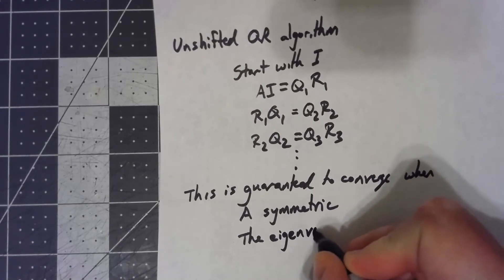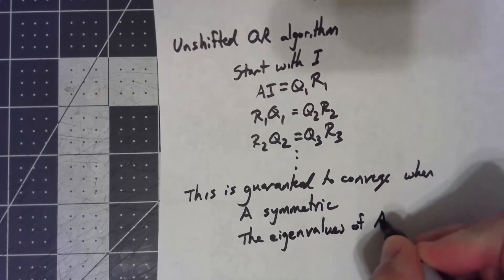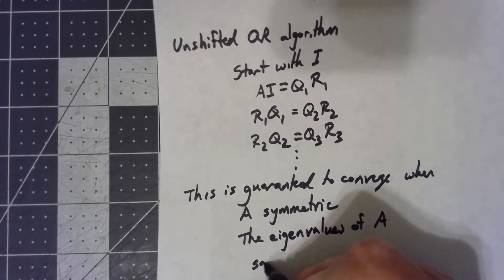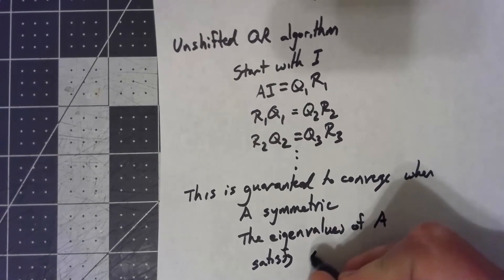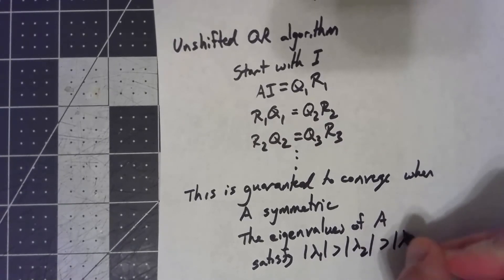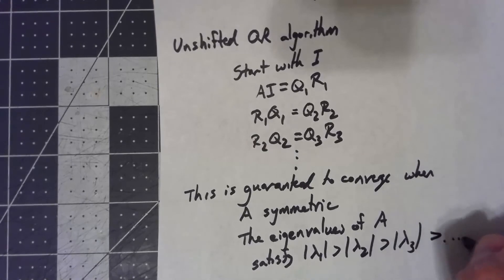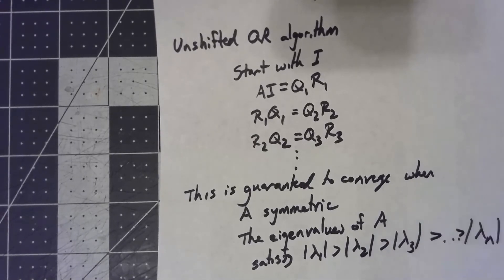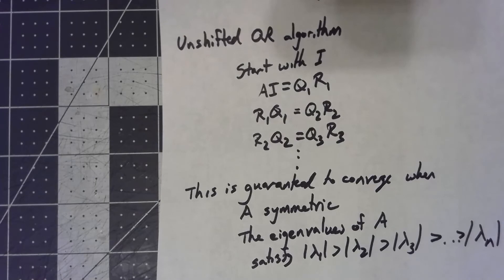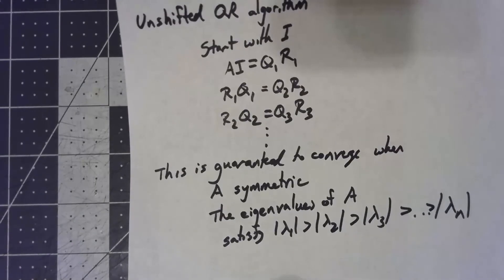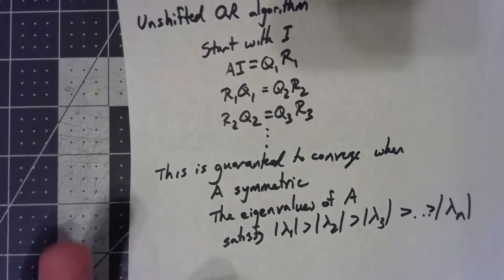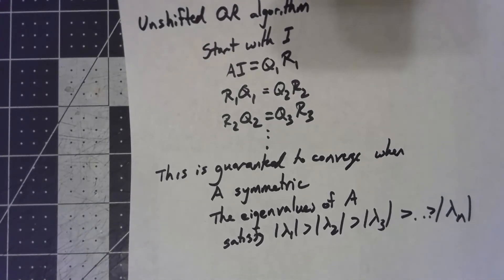And the eigenvalues of A, they have to all be distinct, and more than distinct, they all have to have different absolute values. We have to be able to say there's a strictly dominant one, which is strictly greater than the next, which is strictly greater than the next. We can't have something like both 5 and negative 5 as eigenvalues.